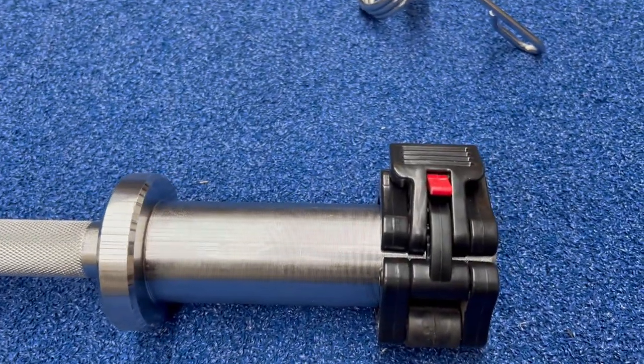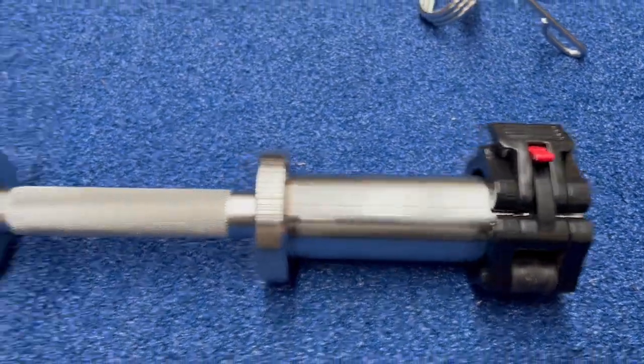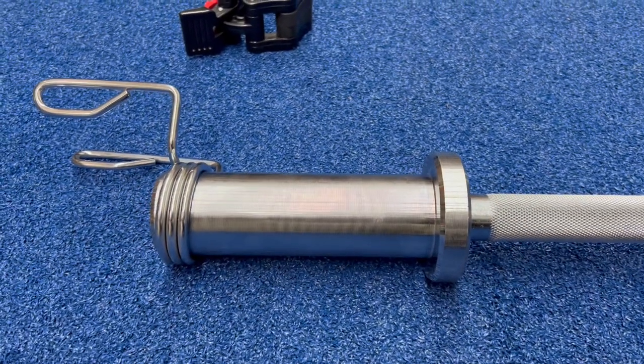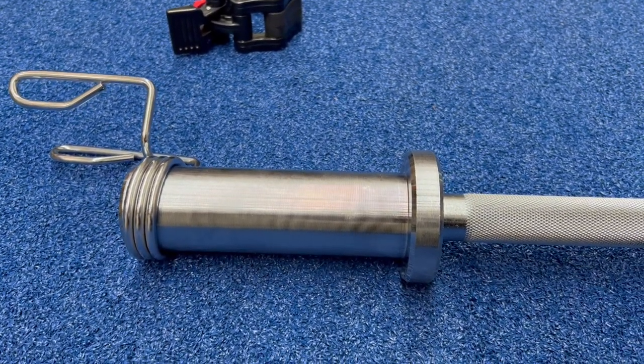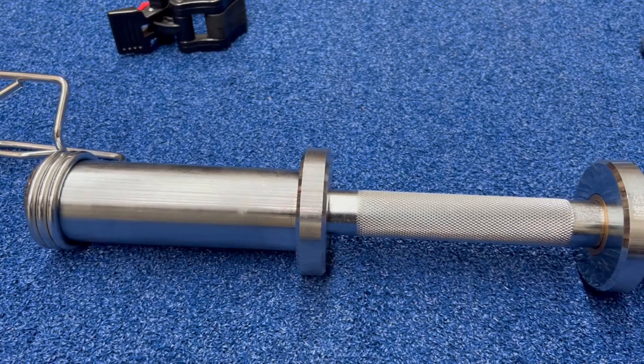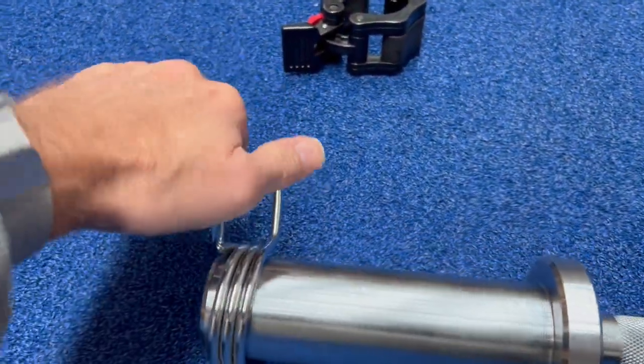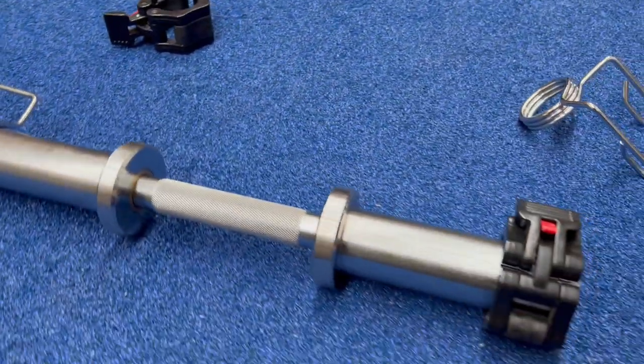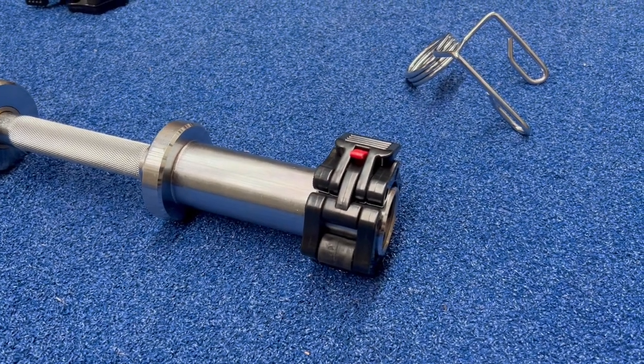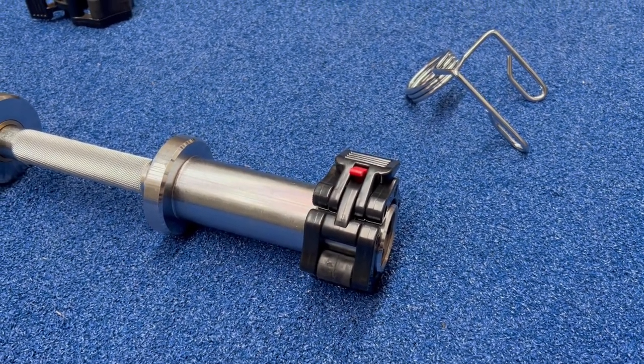The lock jaw collars probably take up a tiny bit more space on the dumbbell. As you can see, the spring collar leaves you a little bit more loading space, but unless you've got really strong hands, the lock jaw is the easier option to work with. They grip really well also.